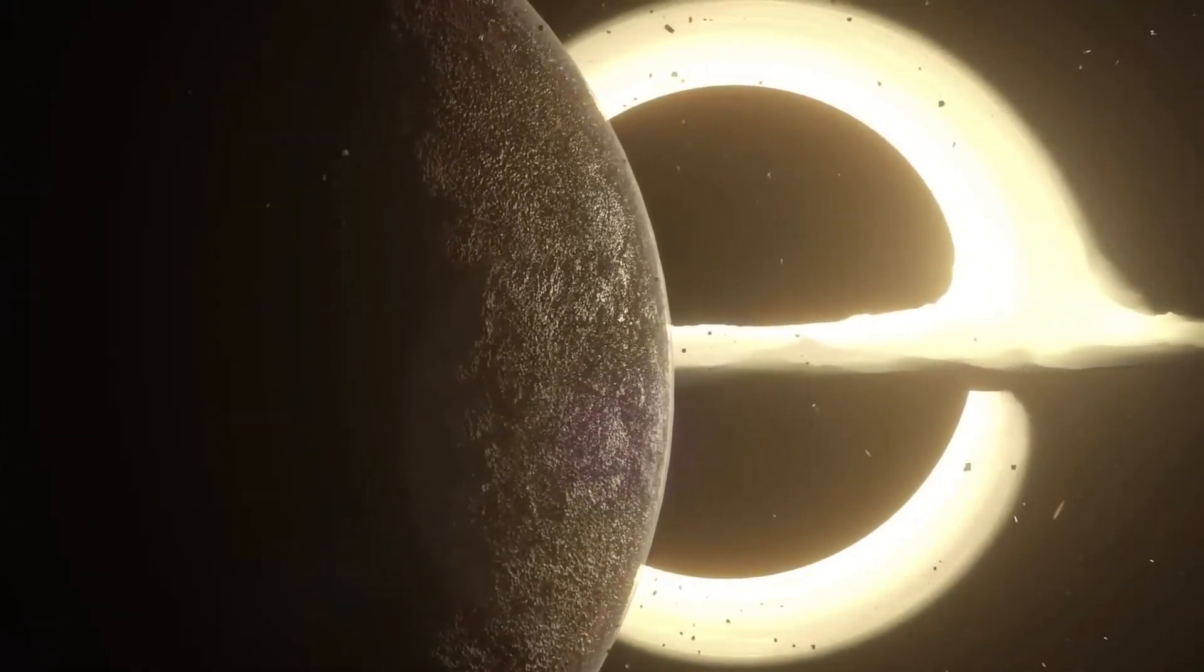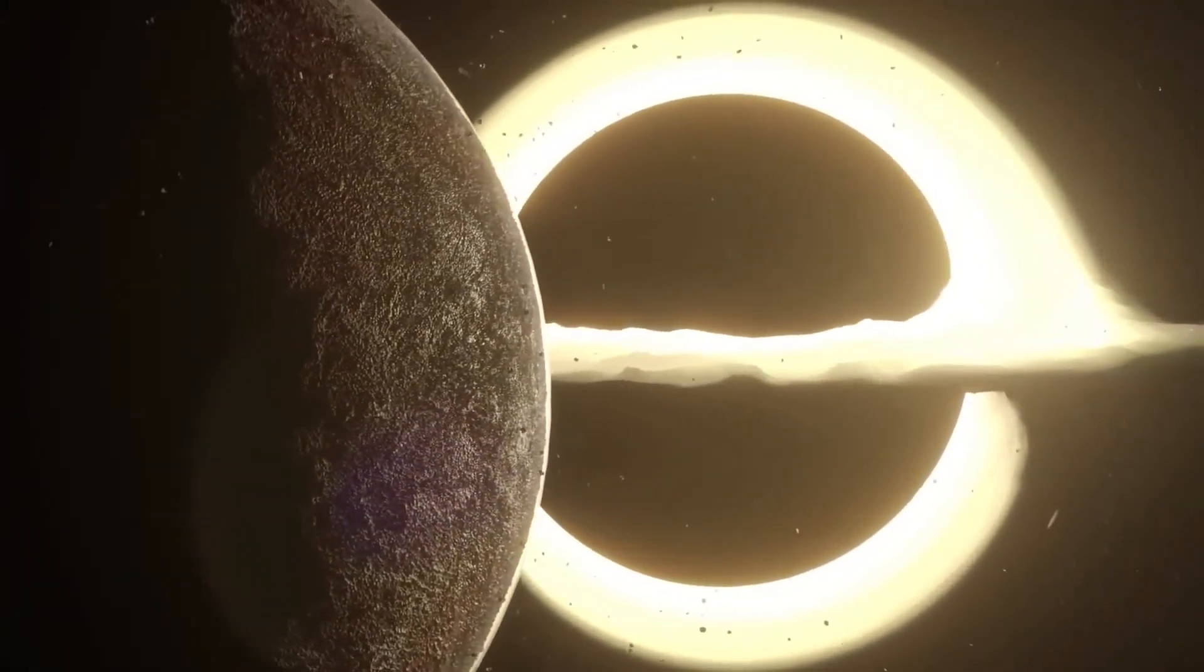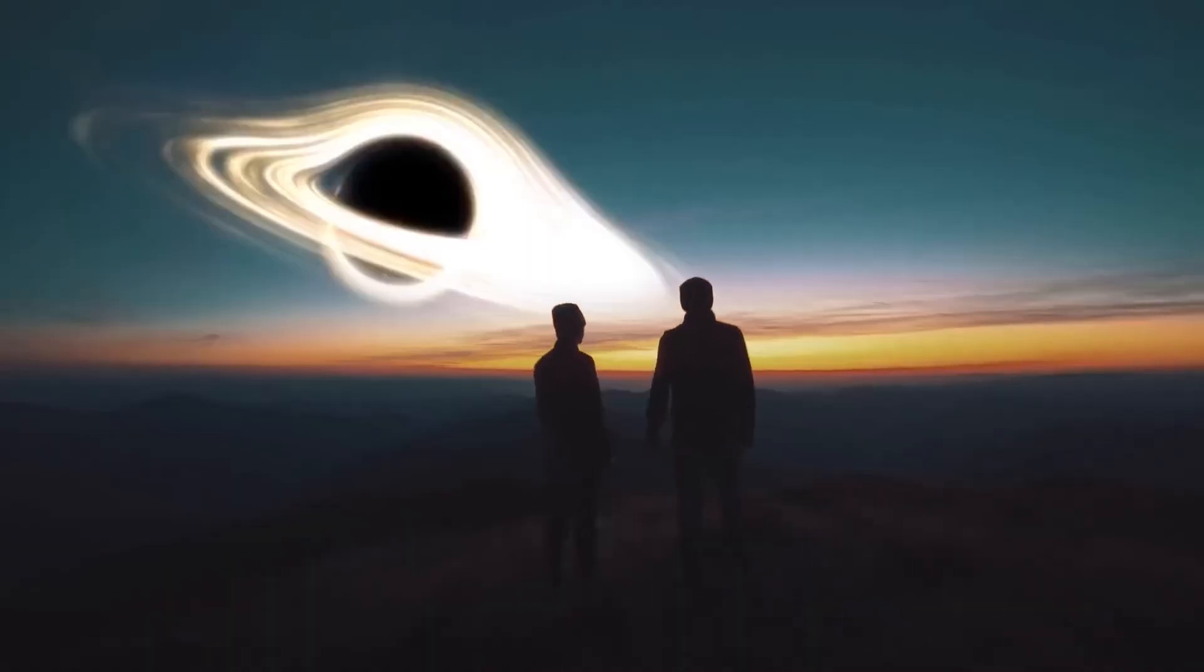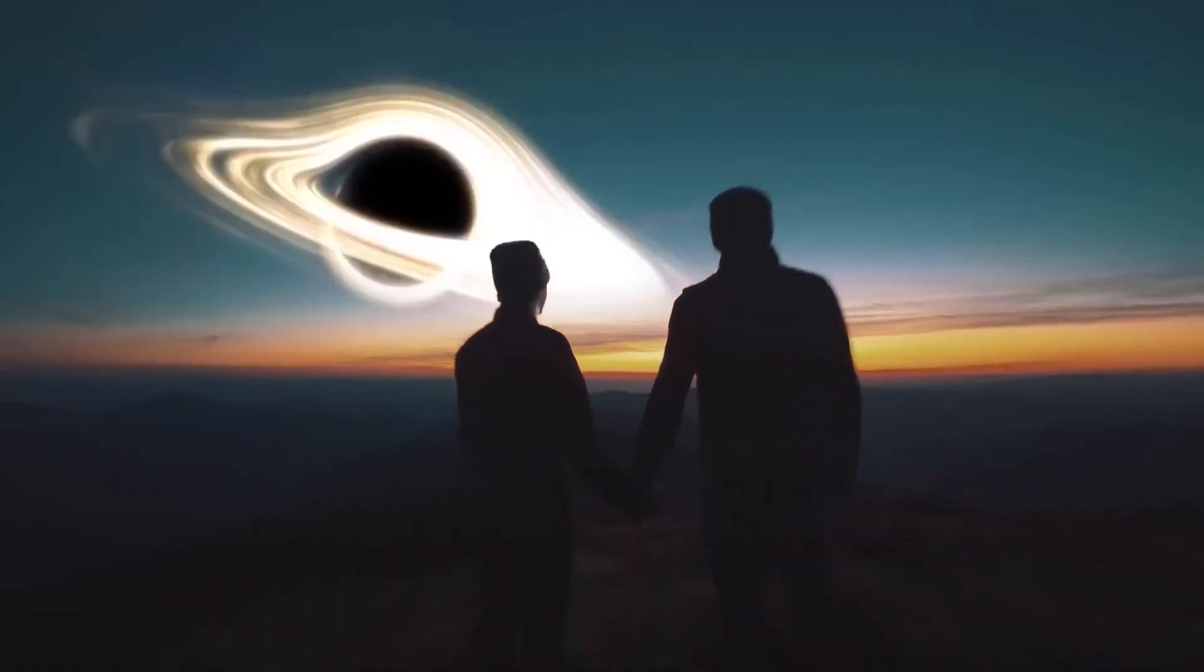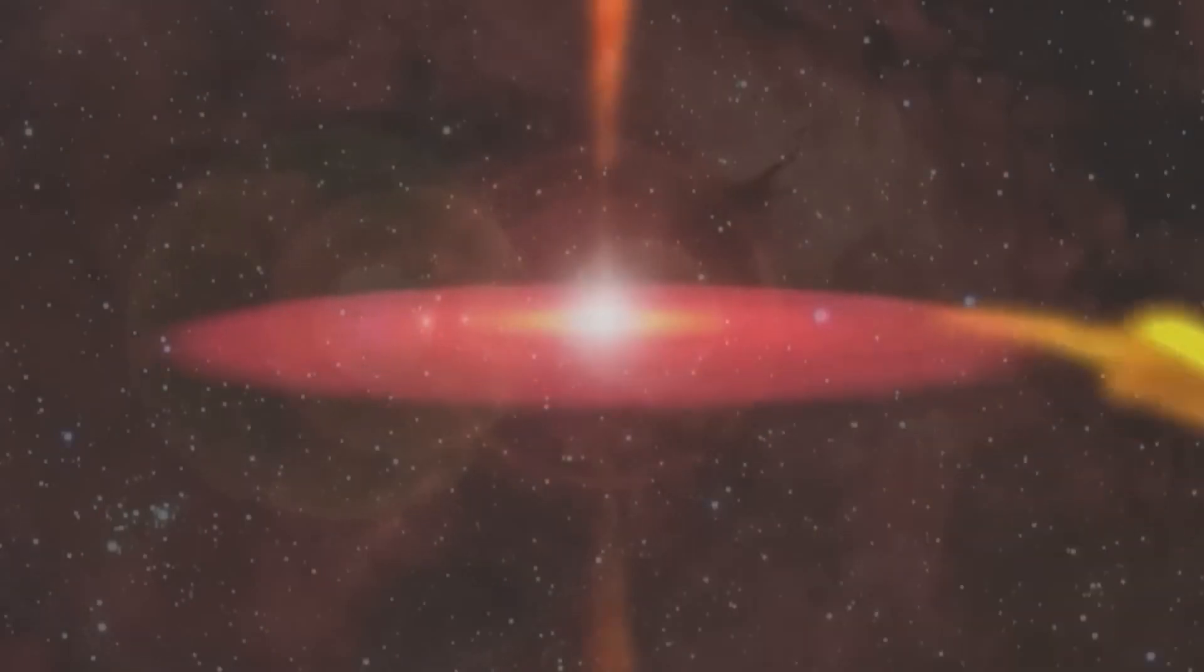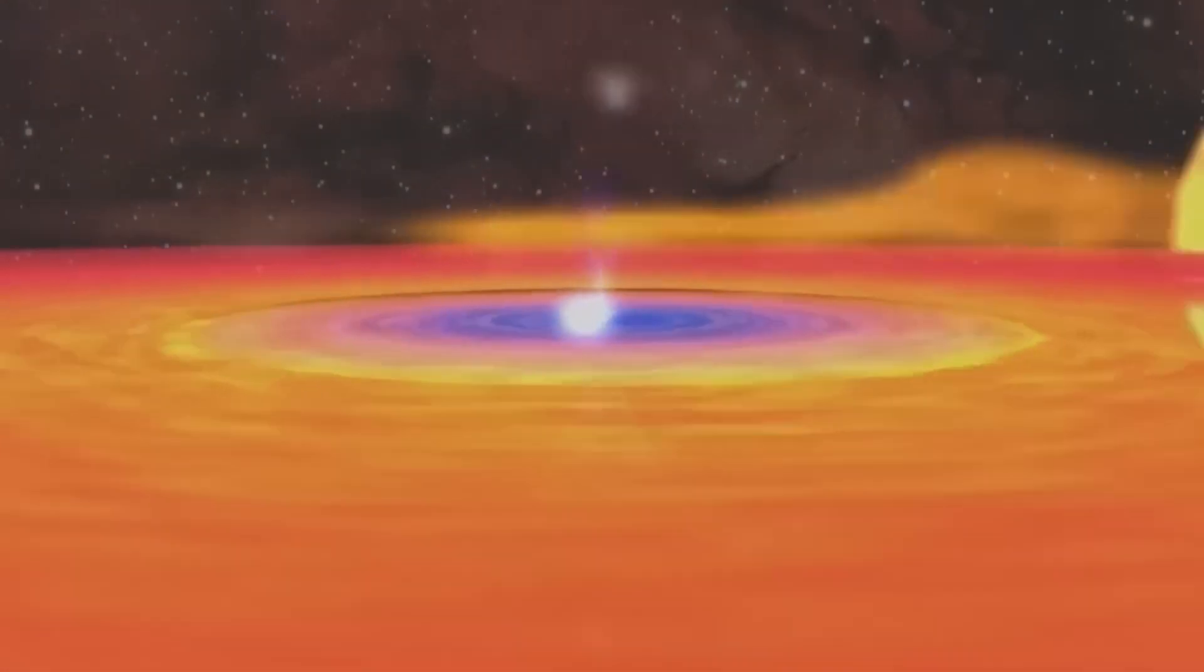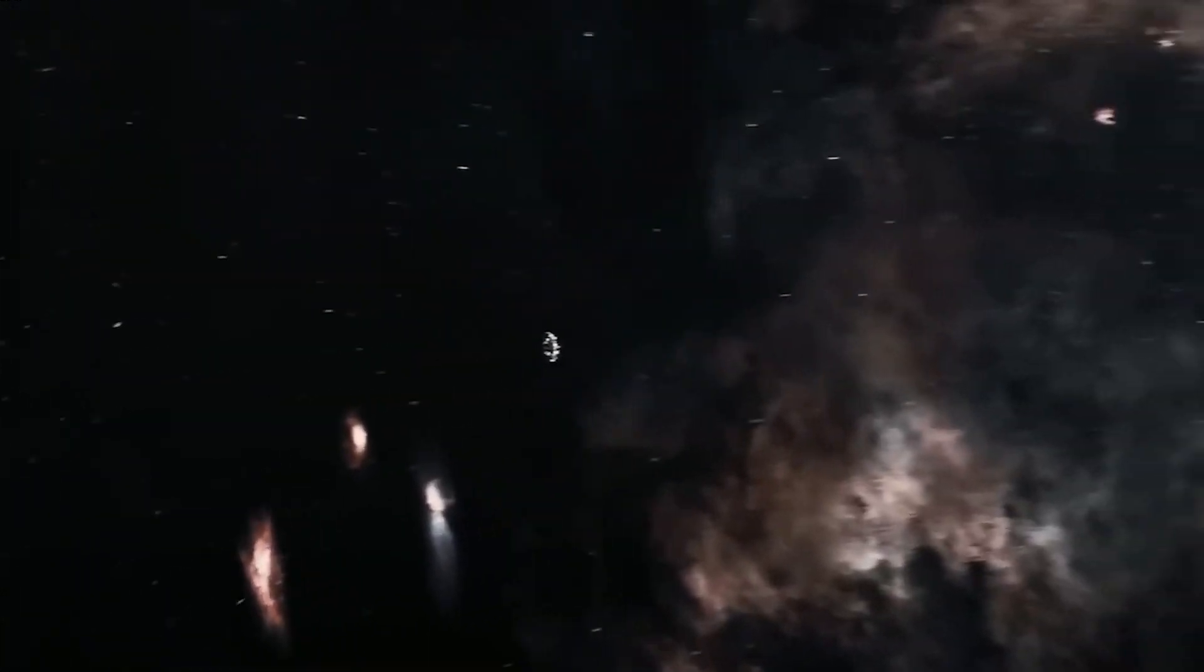But while black holes themselves can't be directly observed, their effects on surrounding matter can be detected. For example, when a star orbits a black hole, the gravity of the black hole causes the star to move faster and faster as it gets closer, resulting in a Doppler shift in its light. This can be measured and used to calculate the mass of the black hole.